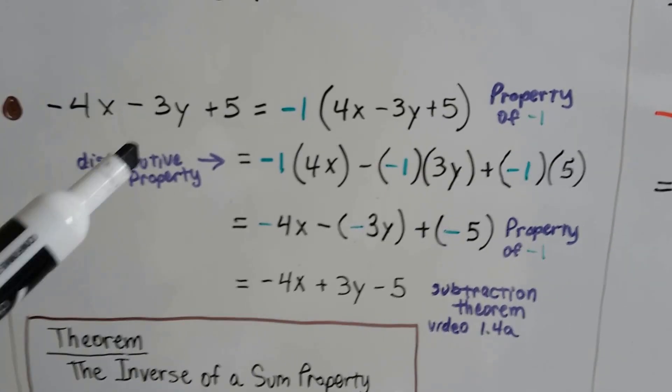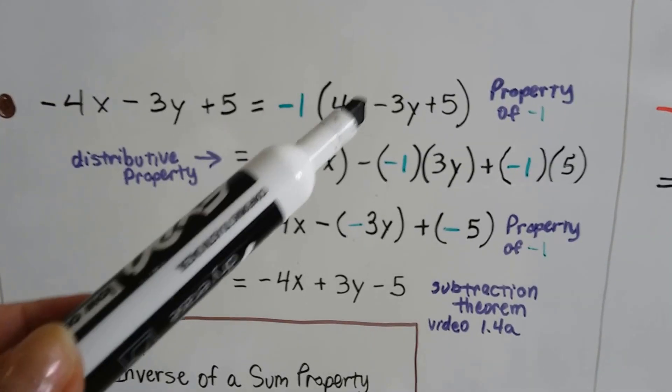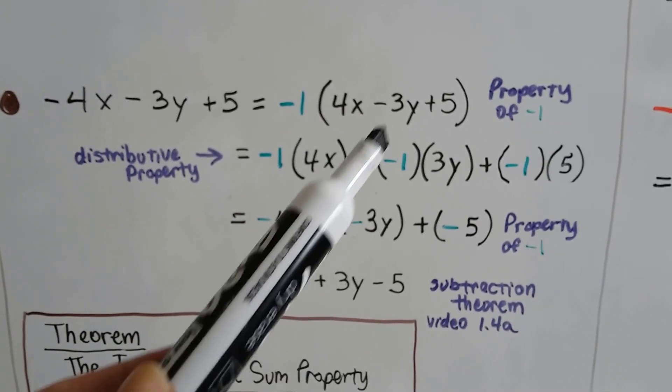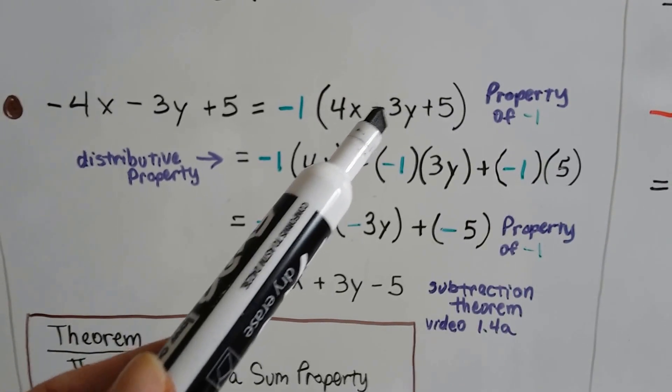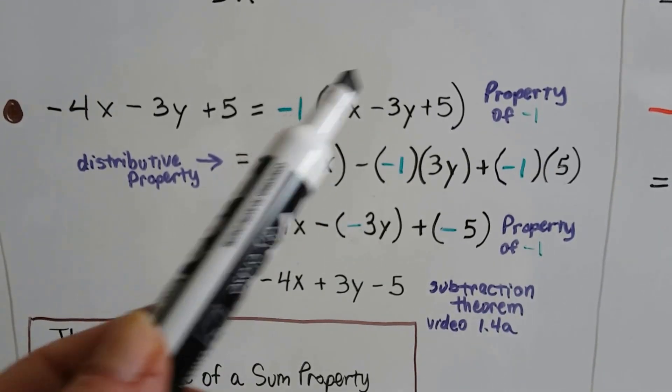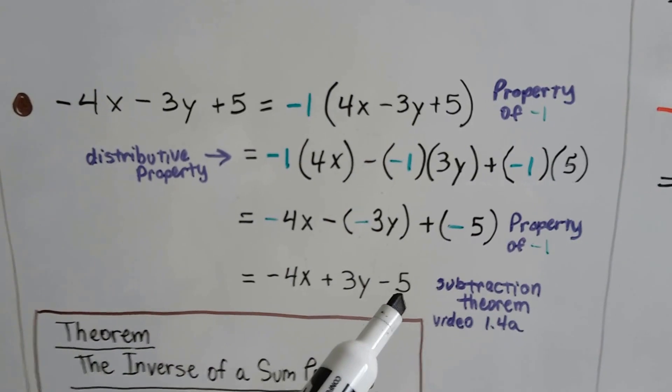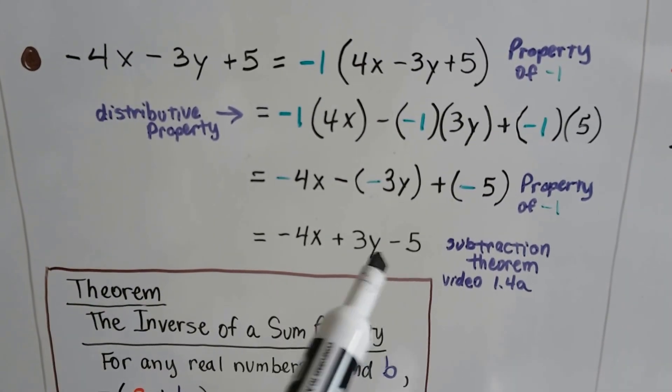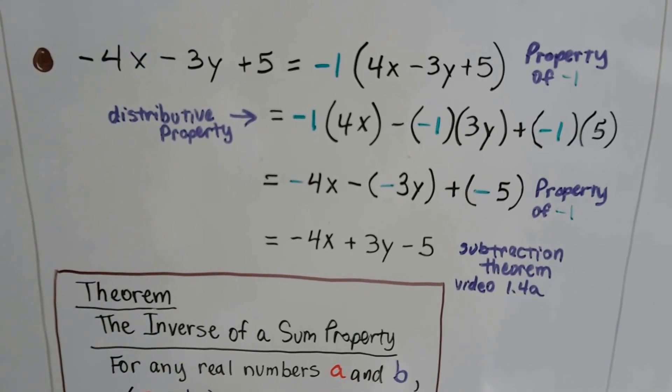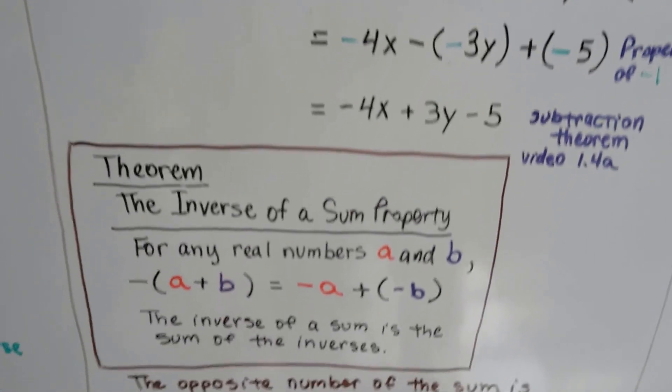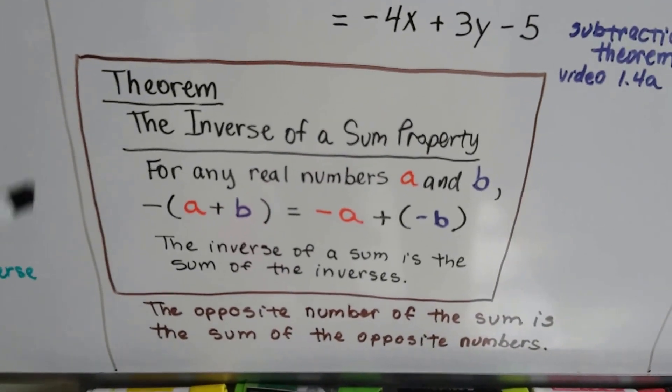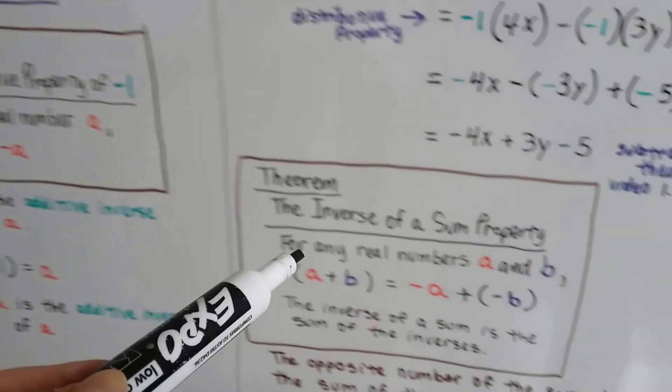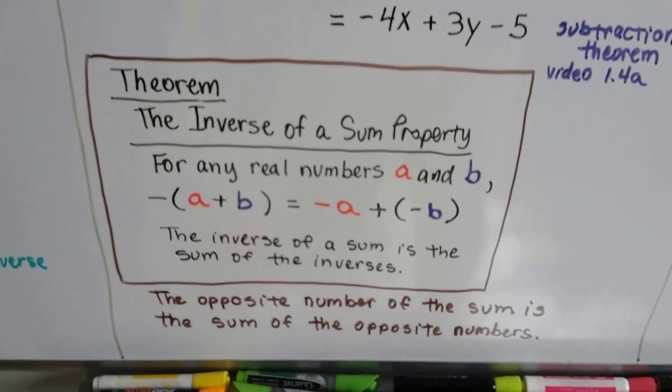So by distributing this negative 1 to each term, we end up with a plus in front of the 3y, because negative 1 times negative 3y is positive 3y, and negative 1 times positive 5 is negative 5. And this is the subtraction theorem that we did in video 1.4a, and there's a link in the description if you want to watch that. So here's a theorem for you, a second one. We had the first one, the multiplicative property of negative 1. Now we get the inverse of a sum property.